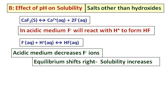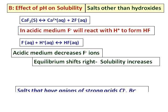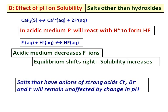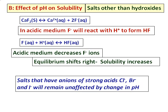What about salts that have anions from strong acids? Salts containing chloride, bromide, and iodide will remain unaffected by changes in pH. Note that nitrate, chlorate, and perchlorate are excluded because they never form insoluble salts.